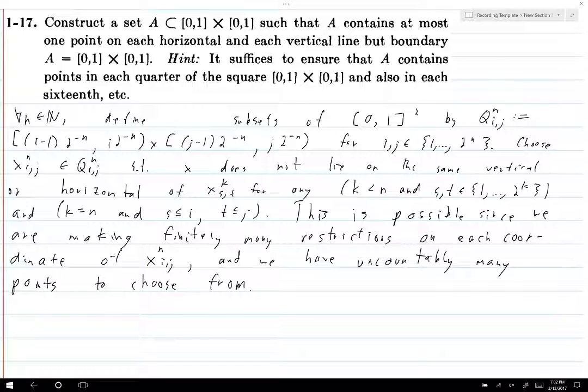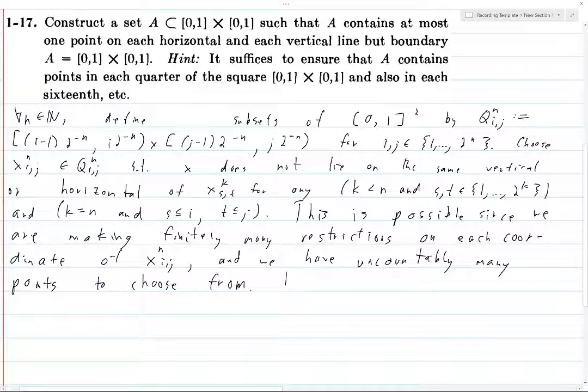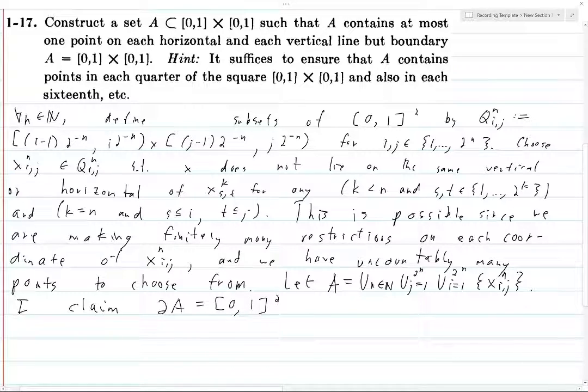So then, once we've done this process for all possible n, let A be the union of these sets. So the union over all n, i from 1 to 2^n, j from 1 to 2^n of these x_{i,j}^n's. I claim ∂A = [0,1]². These are sets, so how do you prove the equality of sets? You prove by inclusion.